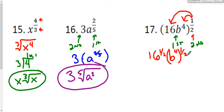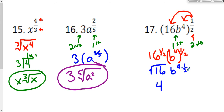So we have 16 to the one-half power, and b to the fourth to the one-half power. The one-half power means the square root, so 16 to the one-half is the square root of 16, which is just 4. Up next, b to the fourth power to the one-half power — I multiply those exponents, giving me b to the four times one-half, which is b to the four over two, which is b squared. That's completely simplified.